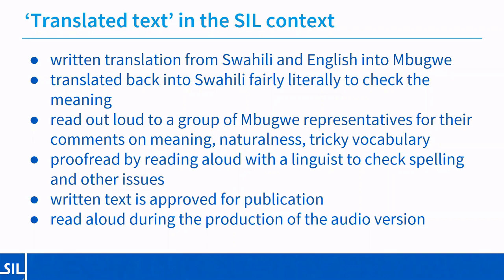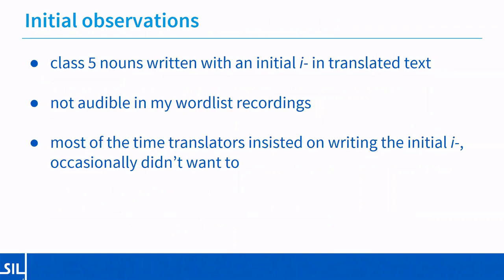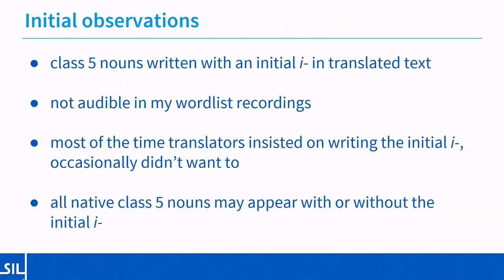Returning to observations about class five nouns during the checking process: there are a few words that translators said could never be pronounced with an initial E, and a few they weren't sure about. It turned out that apart from loan words, every class five noun in my database could start both with or without an E. The nouns originally thought to be class five that couldn't start with E — again, except for a few loan words — actually turned out to be class nine, not five, when listed with a demonstrative. Having observed this, I decided to essentially start from scratch in looking at the morphology of class five nouns.